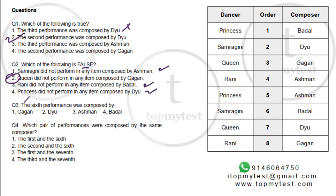Question three — the sixth performance was Samaragini with Badal, which is option four. Question four — which pair of performances were composed by the same composer? The pairs are: one and six (Badal), two and eight (Dew — wait, actually mapped as two and seven — Gagan for three and seven), three and eight, and four and five. One and six is the correct choice, option one.